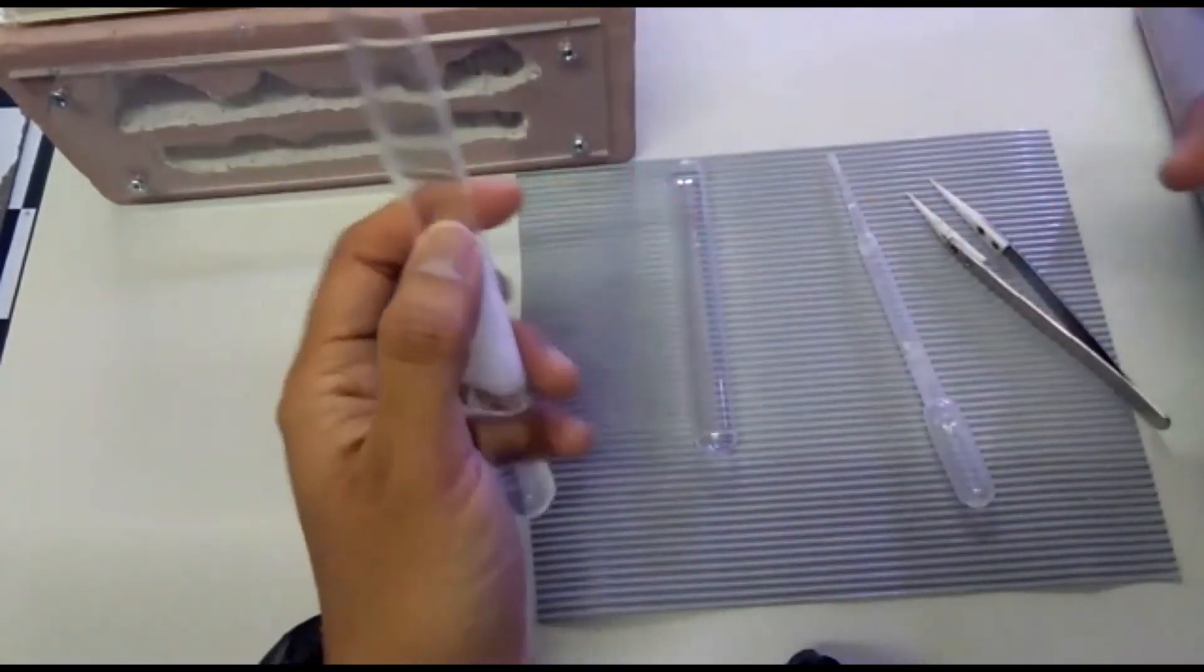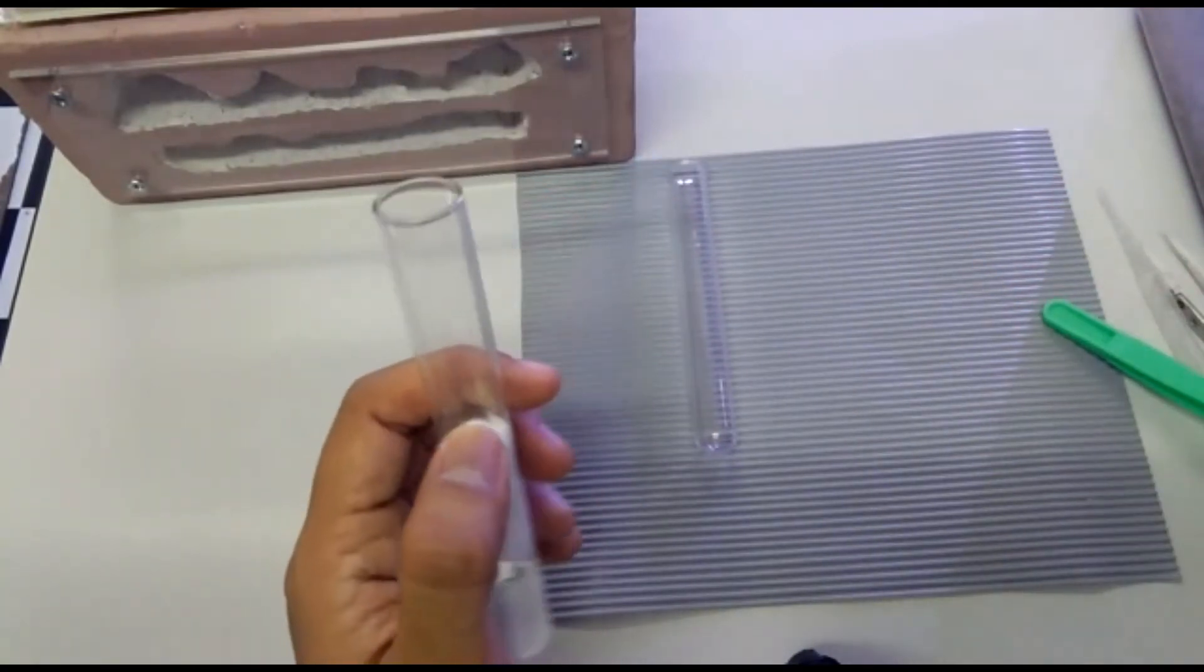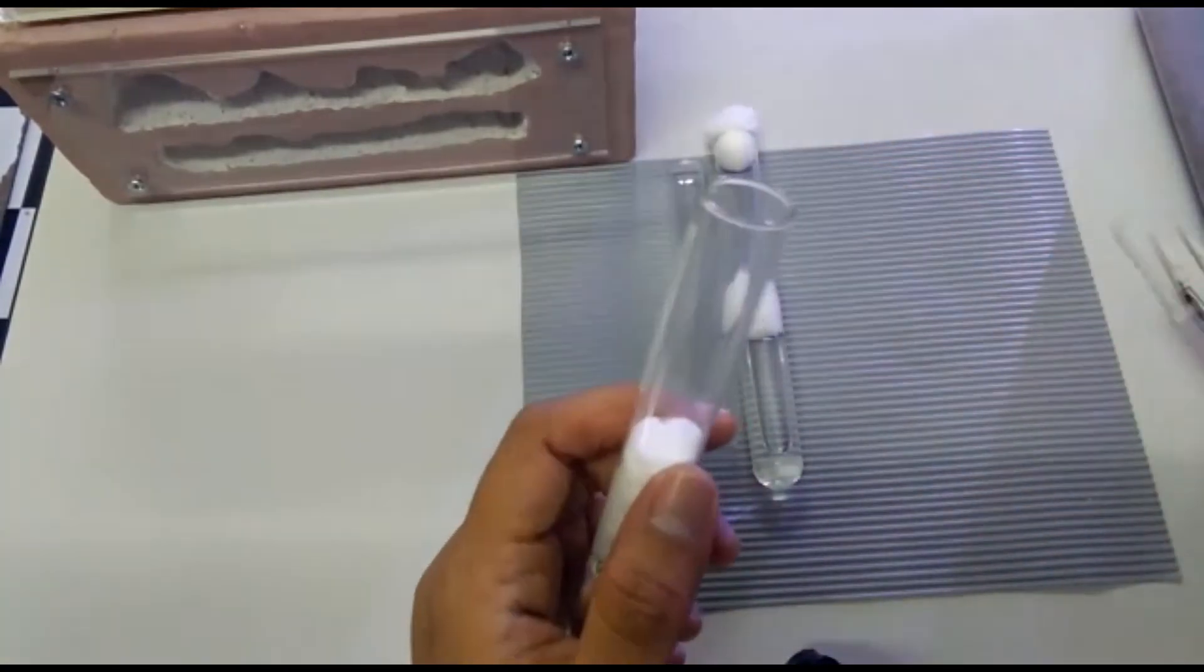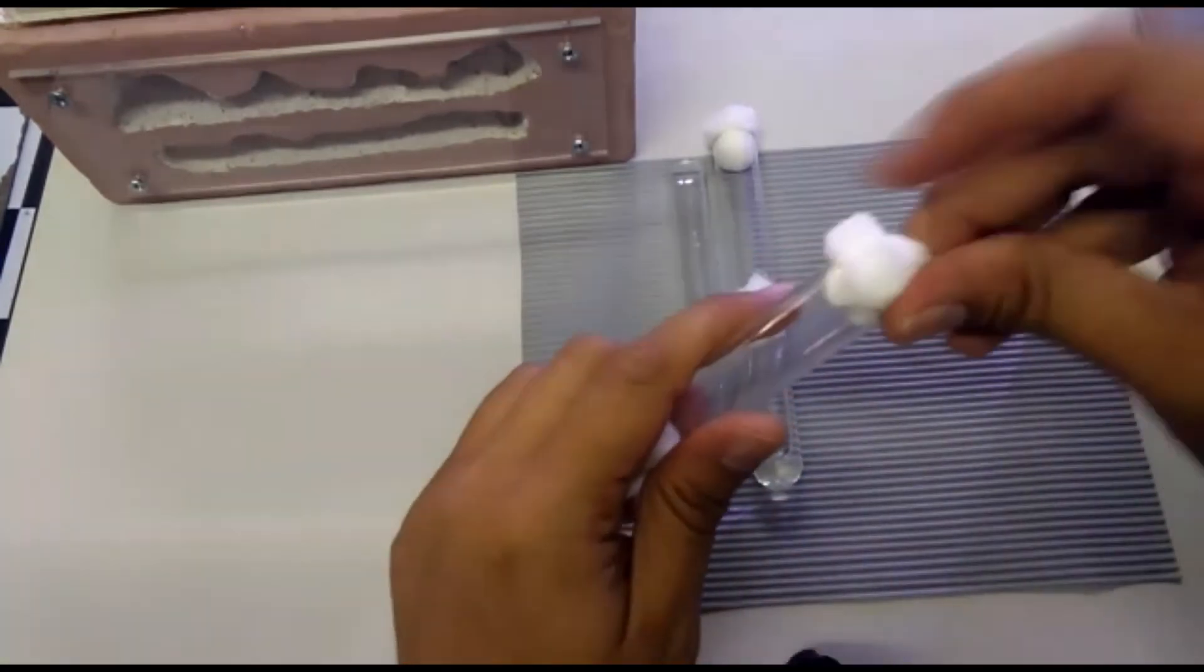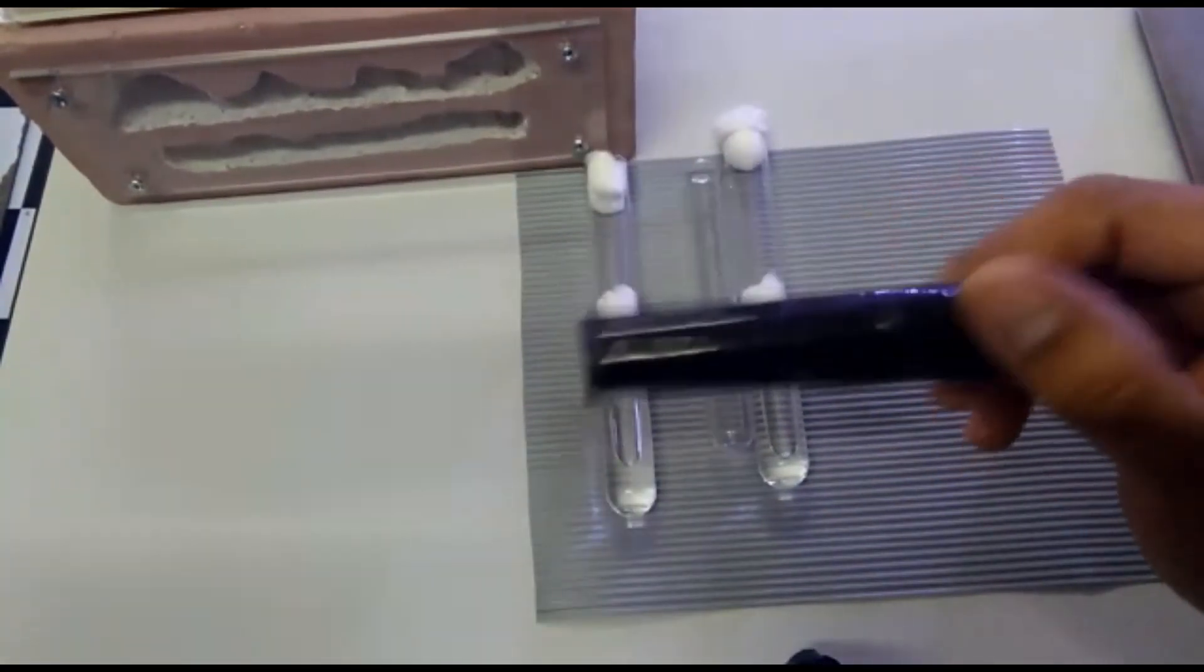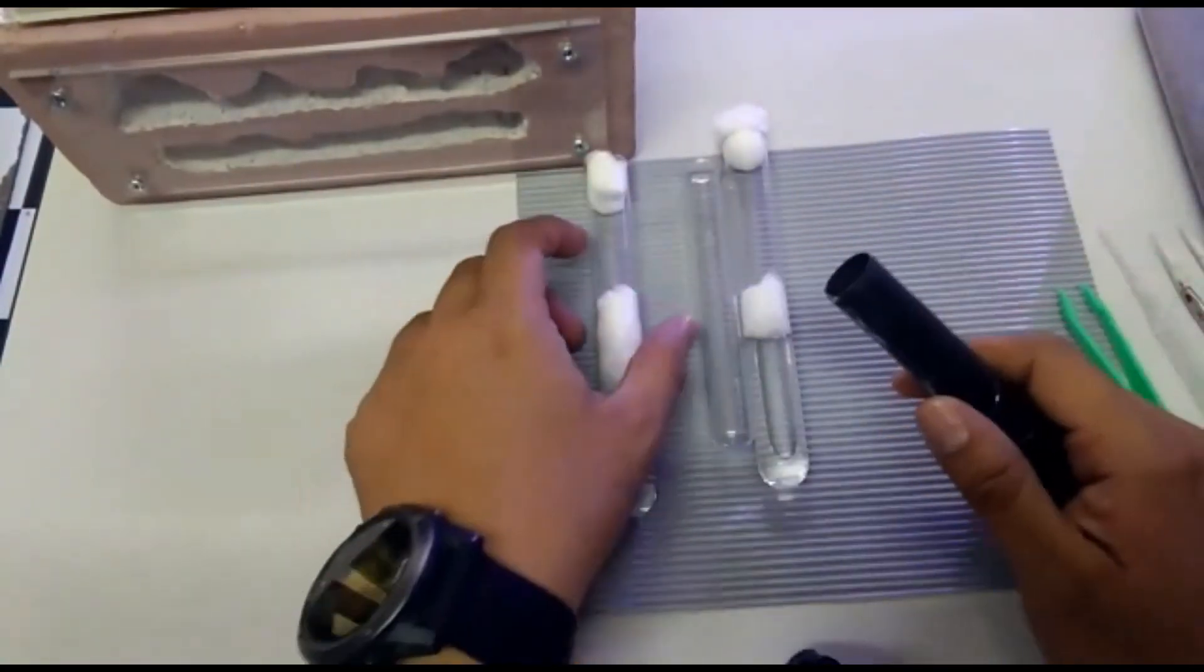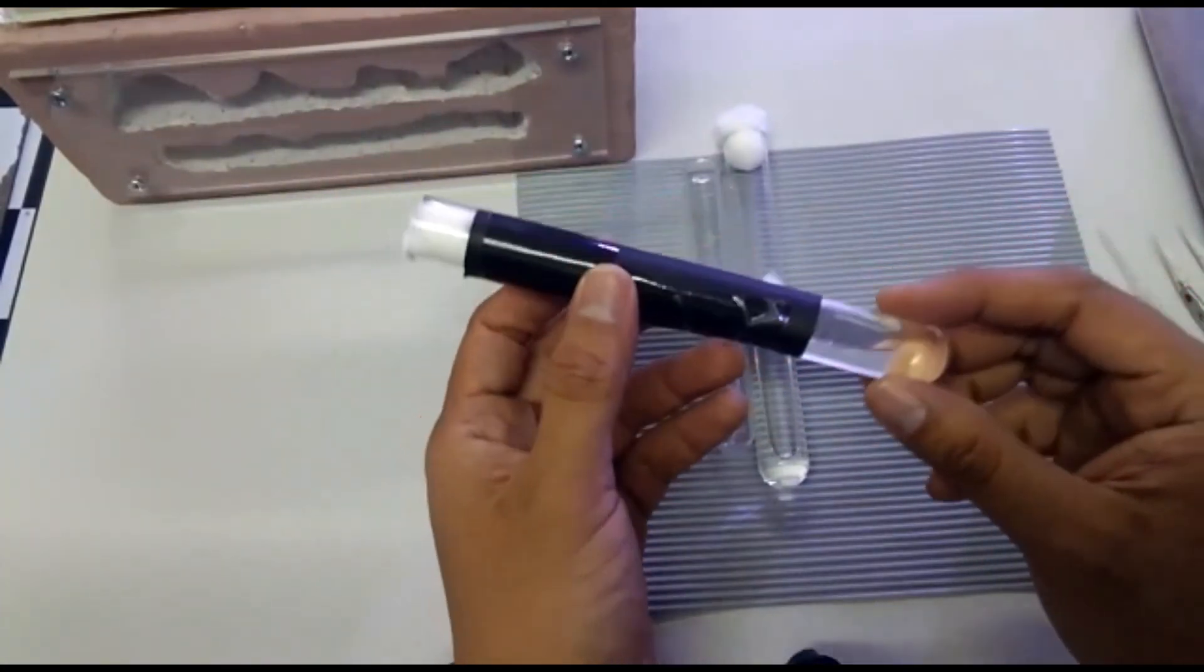After done, we are ready to catch a queen ant. As I said, we have to prepare more than one test tube so that we can catch more queens during the nuptial flight season. We also need to prepare black paper because after we catch the queen, it's better that we close the tube with black paper so that the queen will feel comfortable.